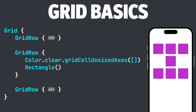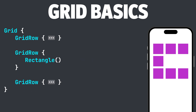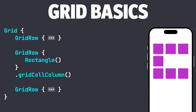What if instead we wanted to fill two columns? We would use the .gridCellColumns modifier. Let's go back to where our rectangle was in the first column. Since we want to expand it to two cells, we can add a value of two inside of the gridCellColumns modifier. Our rectangle has now filled up two columns.